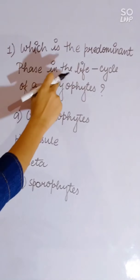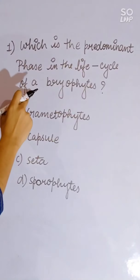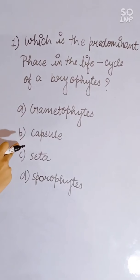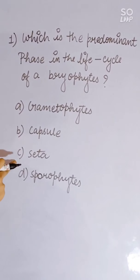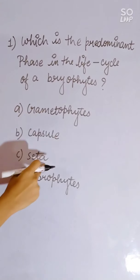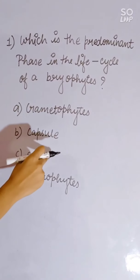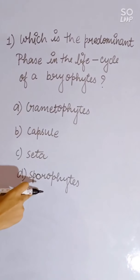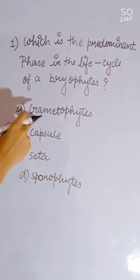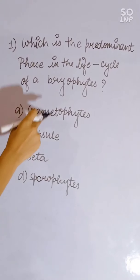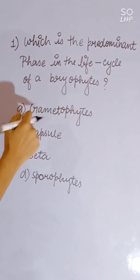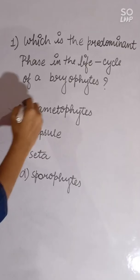Which is the predominant phase in the life cycle of bryophyte? The options are: gametophyte, capsule, zeta, and sporophyte. Capsule and zeta belong to mosses, and sporophyte is the predominant phase of pteridophyte. So gametophyte is the predominant phase of bryophyte. Correct answer is gametophyte.